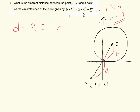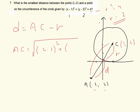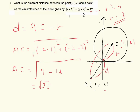Now we need to find the distance AC. AC equals the square root of (negative 2 minus 1) squared plus (negative 2 minus 2) squared, which simplifies to the square root of 9 plus 16, giving the square root of 25, which equals 5. Therefore, the smallest distance D equals AC minus the radius: 5 minus 2, which equals 3.